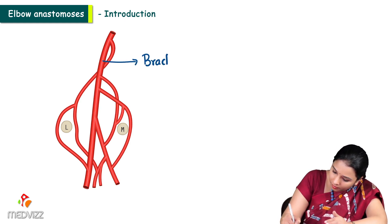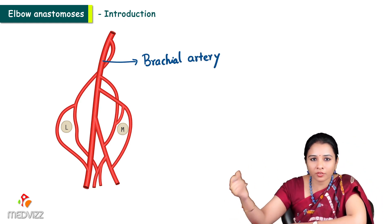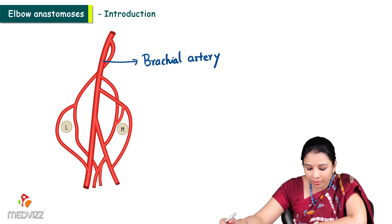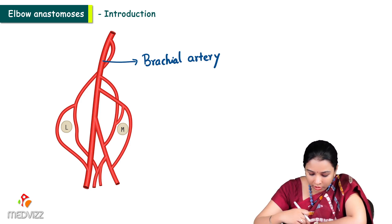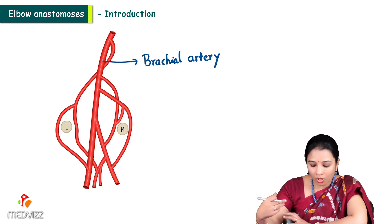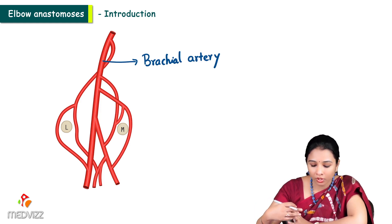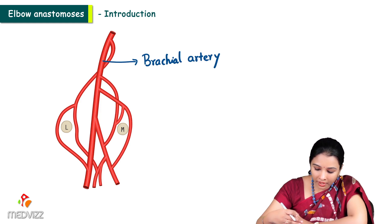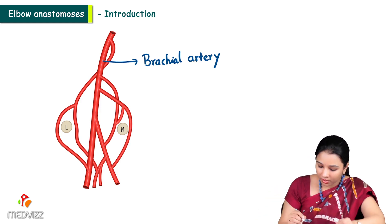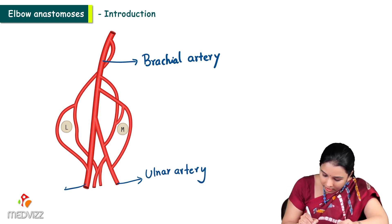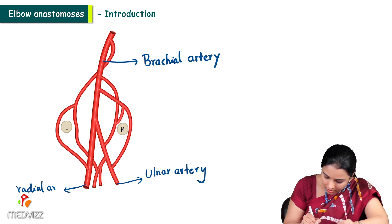During flexion in front of the elbow, the brachial artery may get compressed. When it gets compressed, the other arteries — the collateral branches — all communicate, forming a collateral circulation around the elbow. This communicates the brachial arteries above with the ulnar artery on the medial side and the radial artery on the lateral side below.